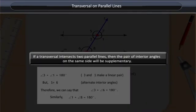If a transversal intersects two parallel lines, then the pair of interior angles on the same side will be supplementary.